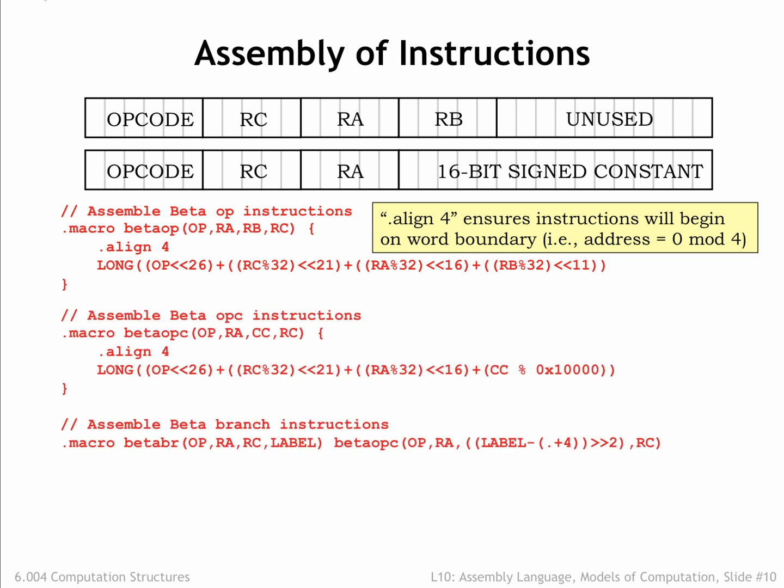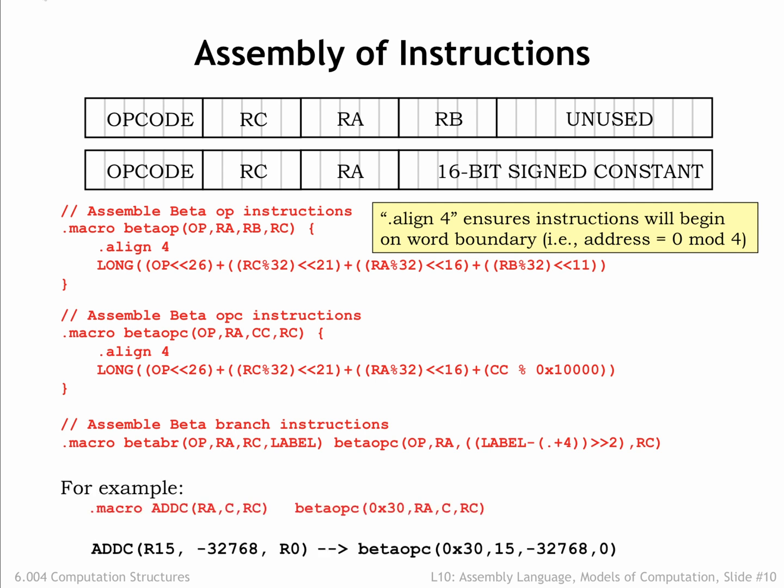And here are the helper macros for the instructions that use a 16-bit constant as the second operand. Let's follow the assembly of an ADDC instruction to see how this works. The ADDC macro expands into an invocation of the beta-opC helper macro, passing along the correct value for the ADDC opcode along with the 3 operands.